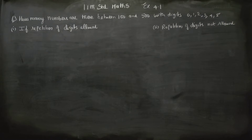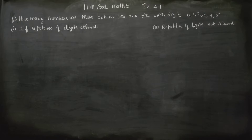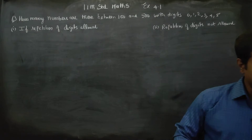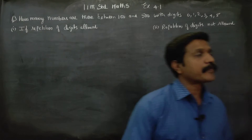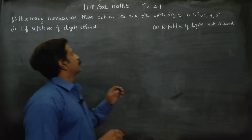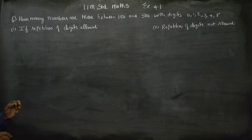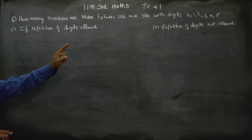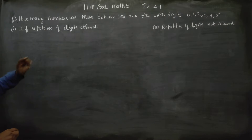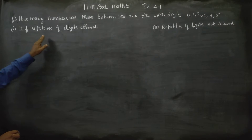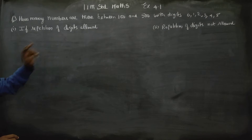Hello, Eleven Standard students. In exercise number 4.1, how many numbers are there between 100 and 500 with the digits 0, 1, 2, 3, 4, 5, if repetition of digits is not allowed?